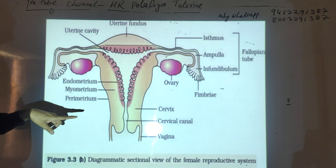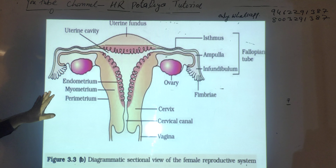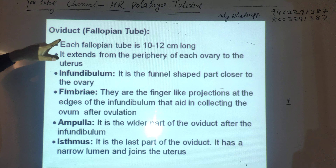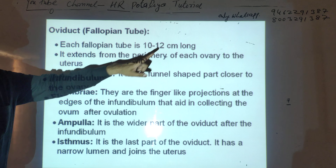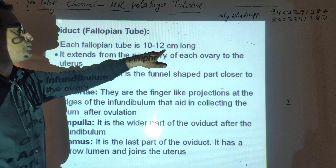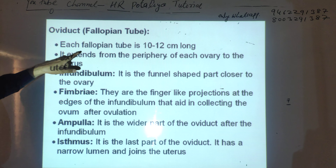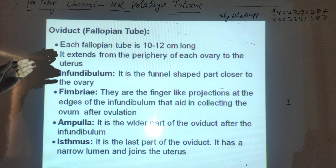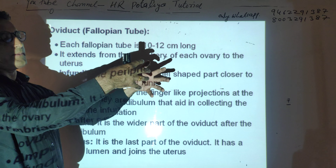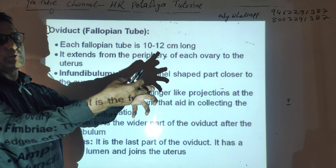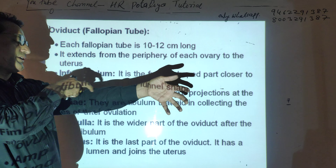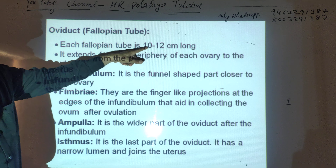Each fallopian tube is 10 to 12 cm long. It extends from the periphery of each ovary to the uterus. The first region is the fimbriae, which have finger-like projections. The fimbriae, along with the infundibulum, are responsible for collecting the ovum after ovulation. The infundibulum is the funnel-shaped structure closer to the ovary. The ampulla is the wider part of the oviduct after the infundibulum.